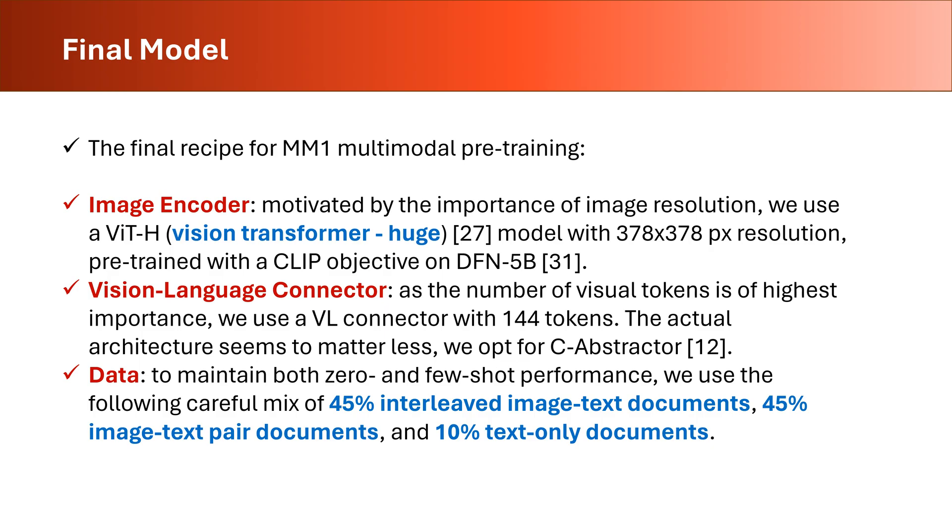The culmination of our efforts is the MM1 model with its state-of-the-art architecture. The image encoder is realized using a huge-size vision transformer. A C-abstractor is used for vision-language connection. Data comprises a carefully selected mix of 45% interleaved image-text documents, 45% image-text pair documents, and 10% text-only documents. This configuration ensures MM1's exceptional performance across various benchmarks.